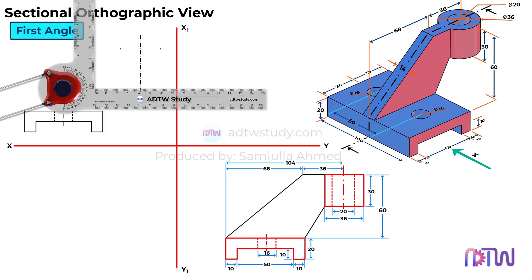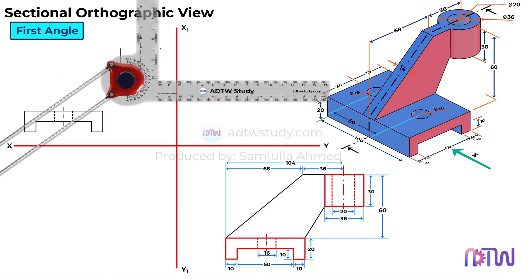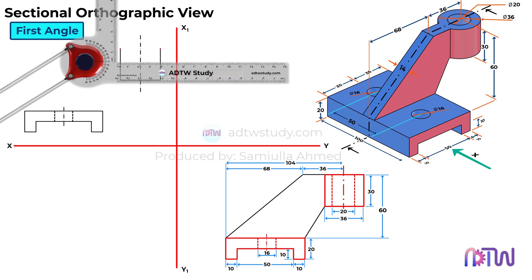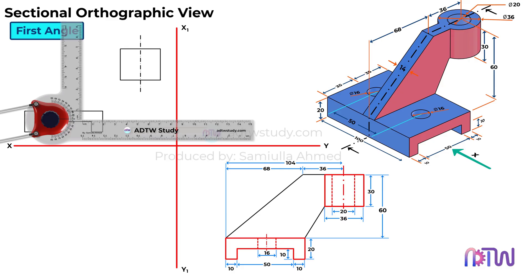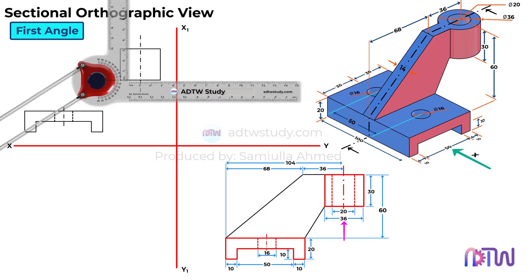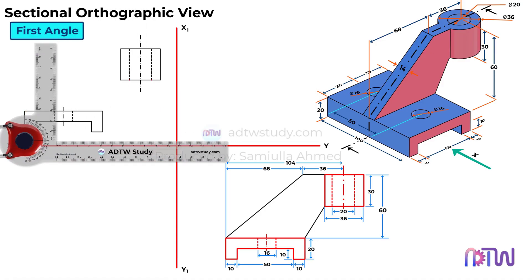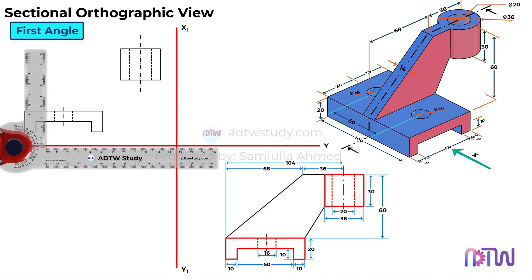From these points, draw vertical lines of 30 mm in height, and then connect them with horizontal lines to form a rectangle. This rectangle represents the outer profile of the hollow cylinder. Now, let's indicate the hollow inner portion of the cylinder. The inner hole has a diameter of 20 mm, so we mark 10 mm on either side of the center line. Using these points, draw dotted vertical lines to represent the hidden hole inside the cylinder. With this, the hollow cylinder is complete.